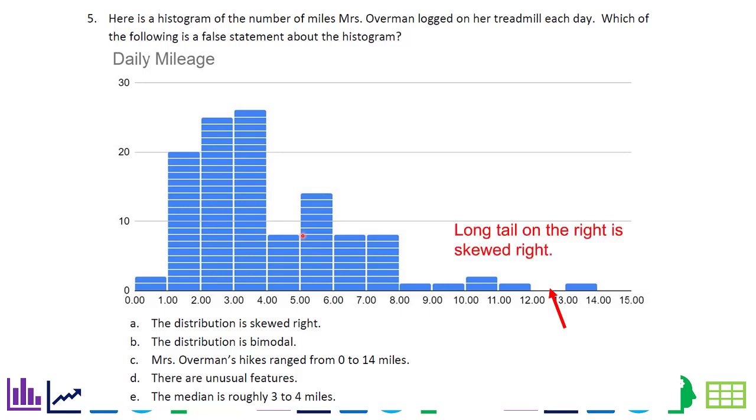We have a long tail on the right, so it is skewed right. Remember we're saying false statement. So you might be tempted to click on A, but we said false. So we don't want A.